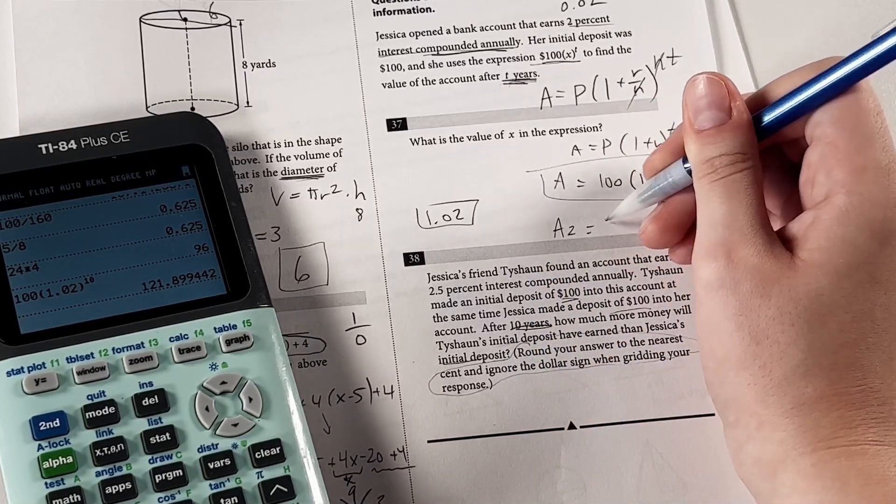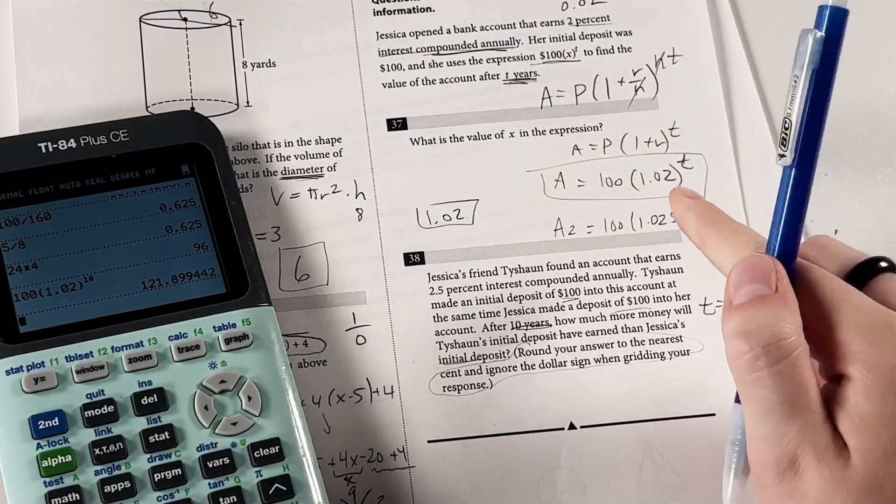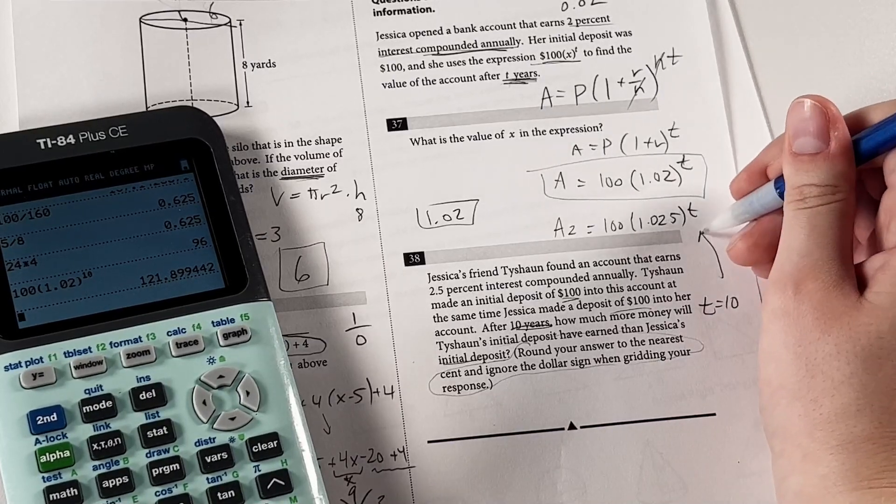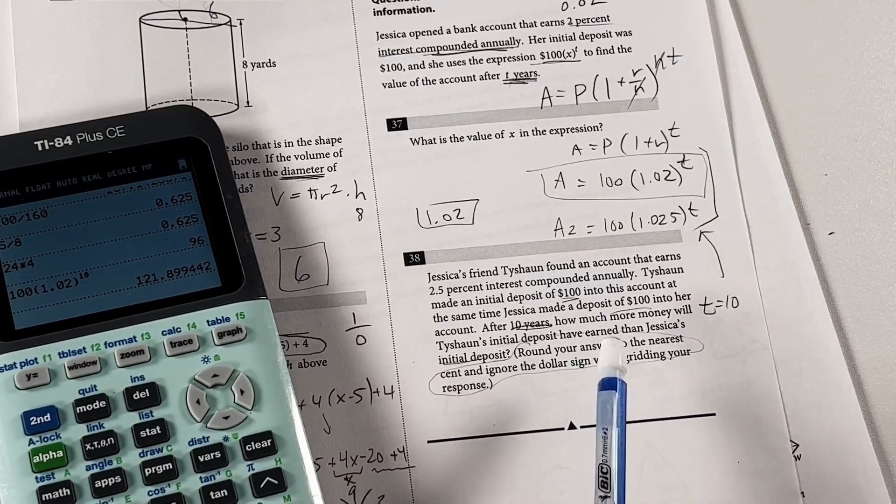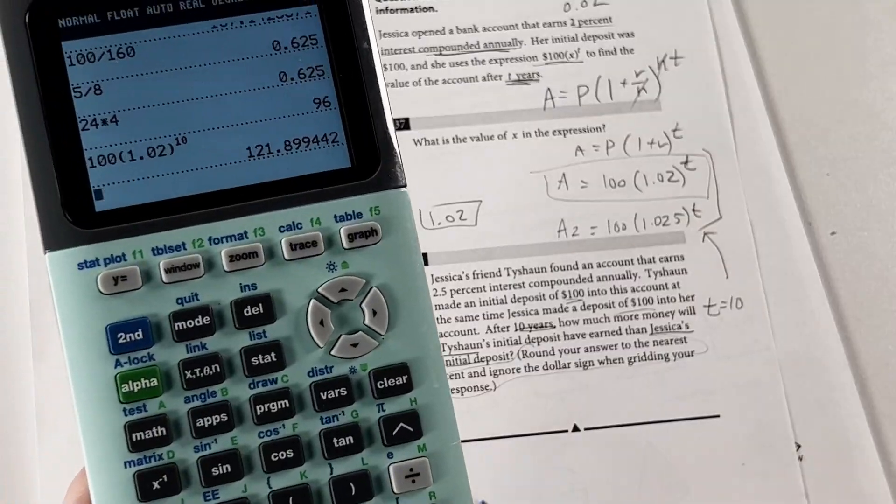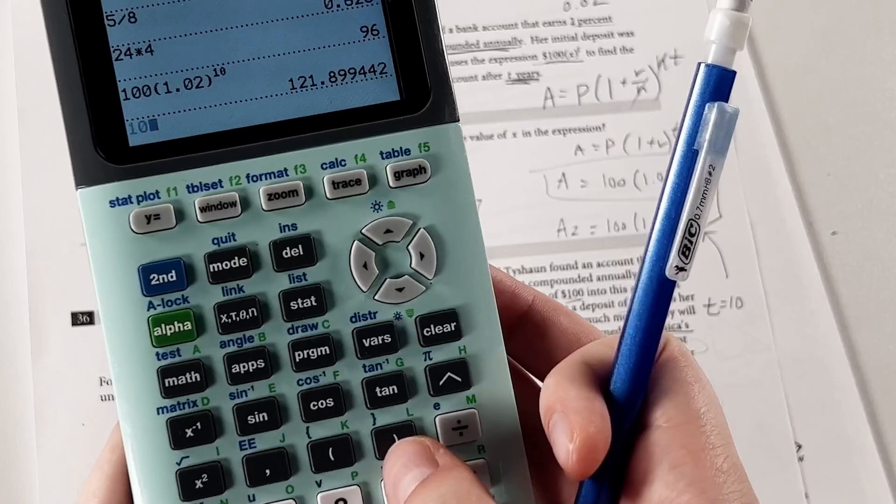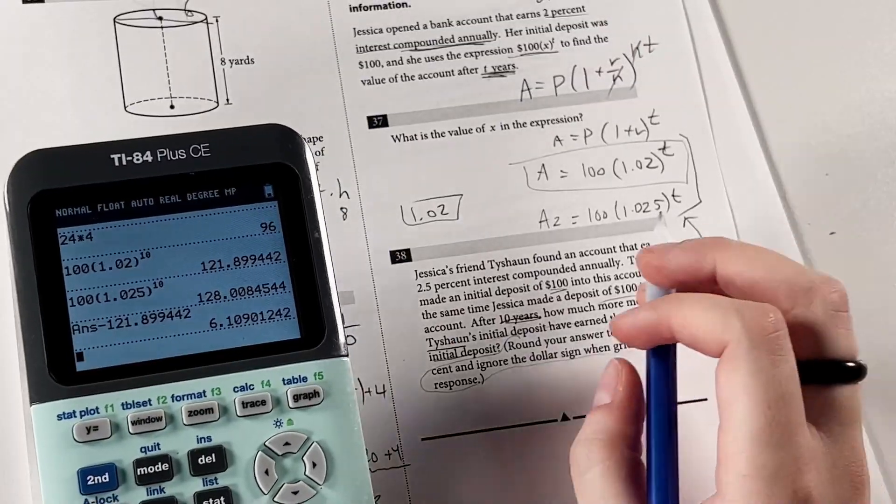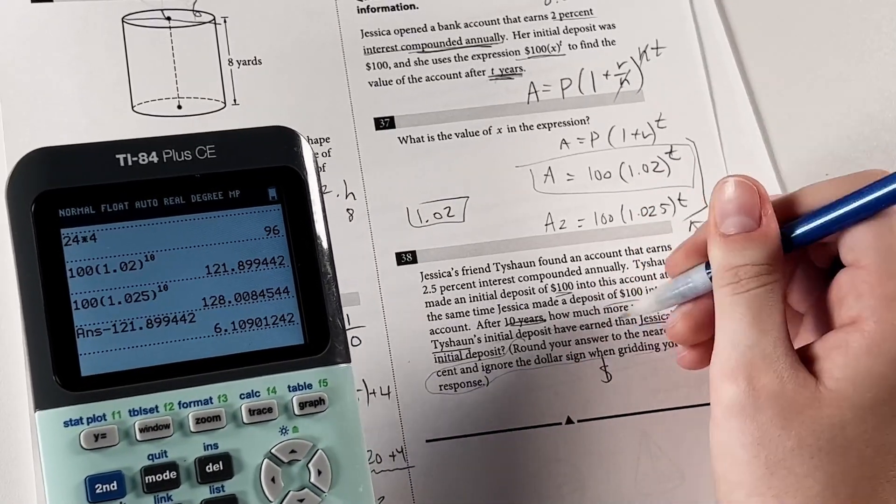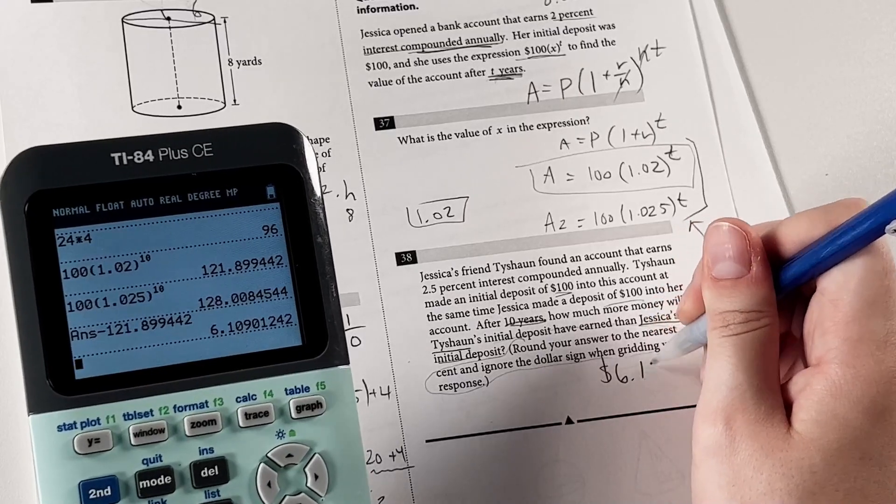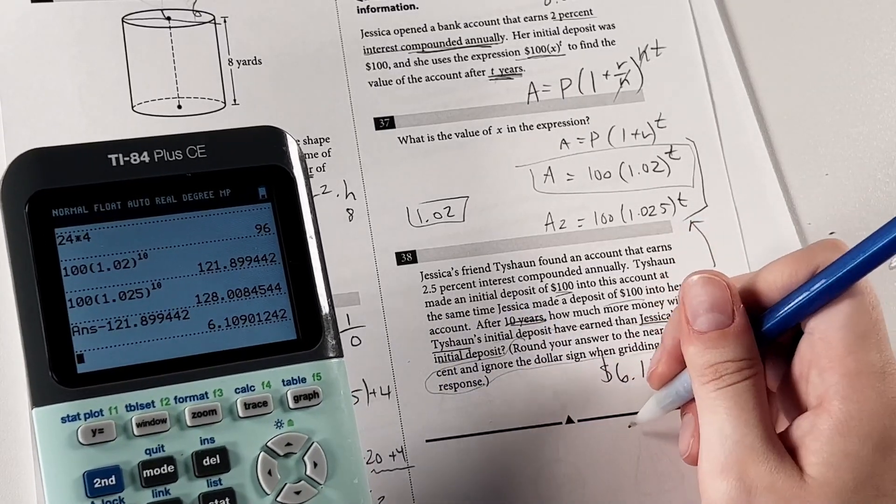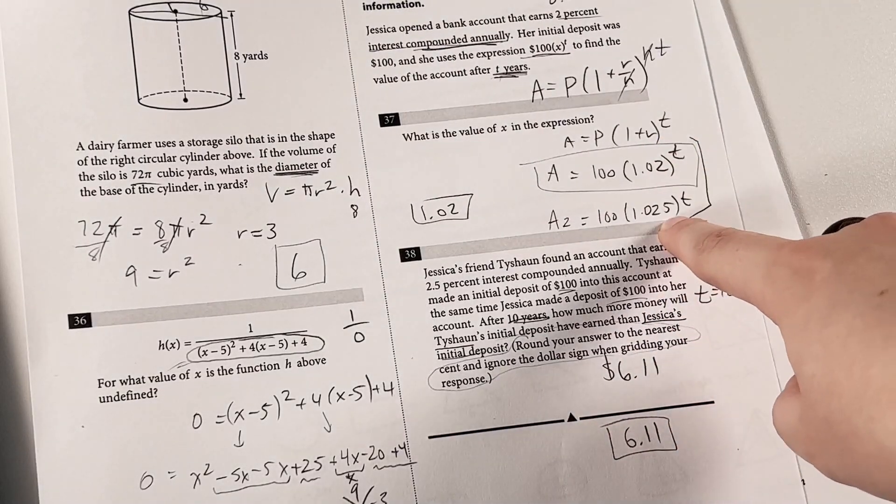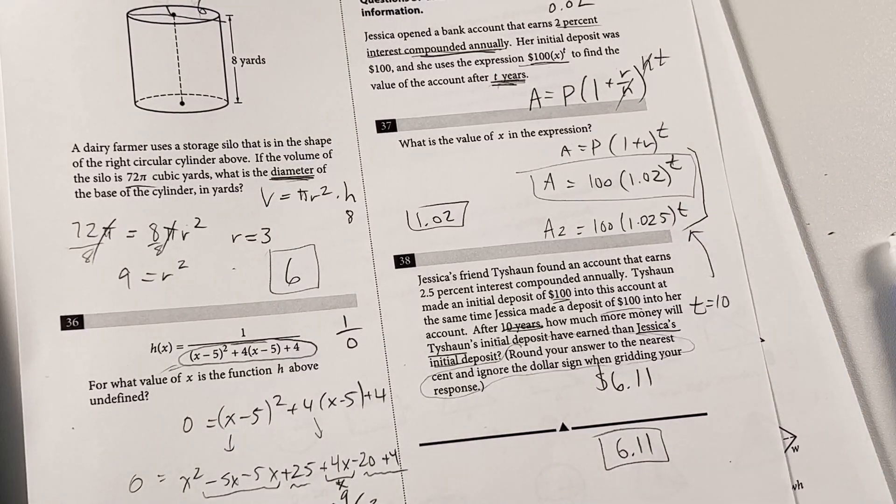Tashan's equation, we'll call that a2, looks like this since he has a slightly higher interest rate of 2.5 instead of 2. So we can just plug in the t equals 10 to both equations, subtract them, and that gets us how much more money he's earned than Jessica. So we already plugged in the 10 to Jessica's. Let's plug in the 10 to this one as well. So we get 128, we subtract the 2, we get about 6.1. And remember, these are in dollars, and we're rounding to the nearest cent, so we want to go 6.11 dollars. And we ignore the dollar sign when grading in, so our answer is 6.11. To check this, just make sure that you're comparing the right things, that you wrote this equation right, and that you don't make any careless mistakes with your calculator.